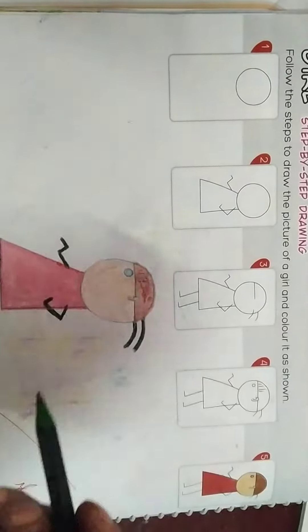First of all, we make a circle in the box or in your place. Where you have empty place, you make a circle.